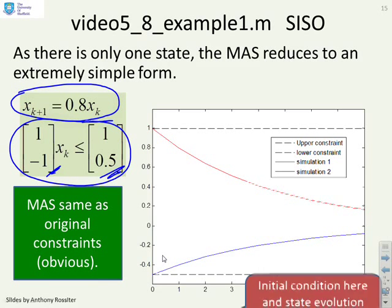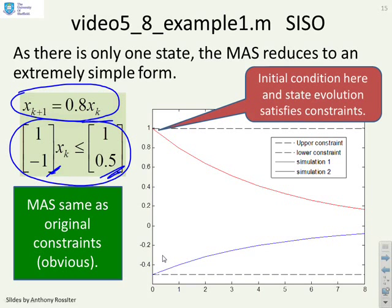And what I've done here is I've plotted the state evolutions. And therefore, it should be obvious that if you start, for example, at a limit, you're always going to converge down to 0. And therefore, you only need to ensure the state satisfies the constraints at the first sample, and it must satisfy them thereafter. But that's a simple one-state example, and maybe that's obvious.